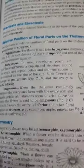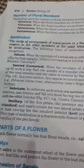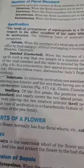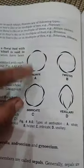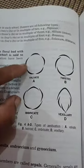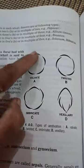Next is aestivation. Aestivation refers to the arrangement of sepals and petals in a flower bud. One type is valvate, where the sepals or petals just touch each other at the margins without overlapping.